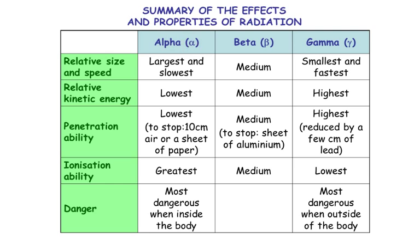So alpha, the relative speed, is actually the largest and the slowest. Beta is kind of in the medium. And gamma is the smallest and the fastest. The kinetic energy, alpha has actually got the lowest. Gamma has got the highest.